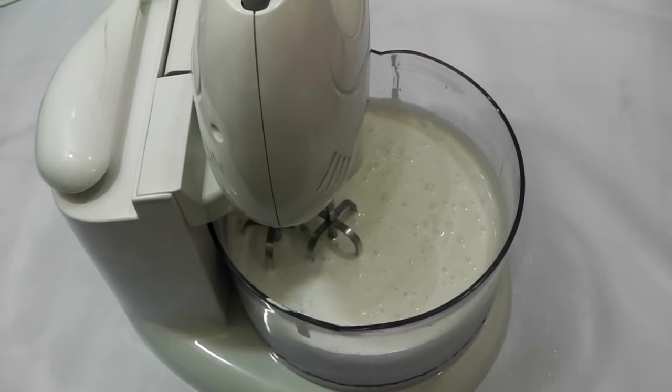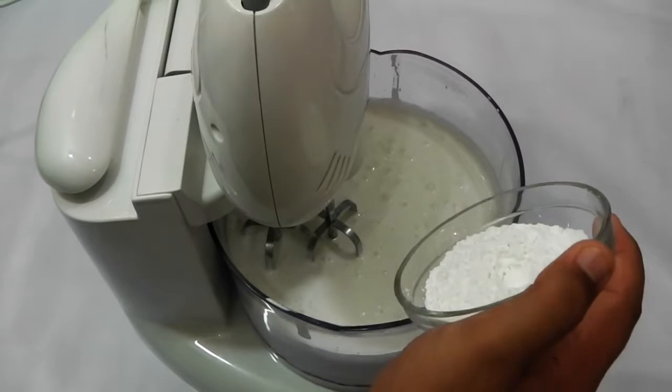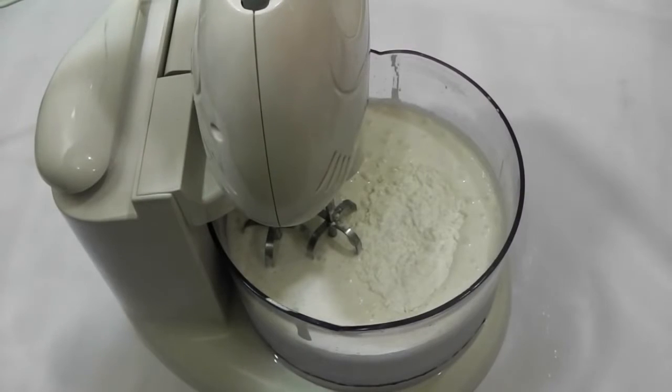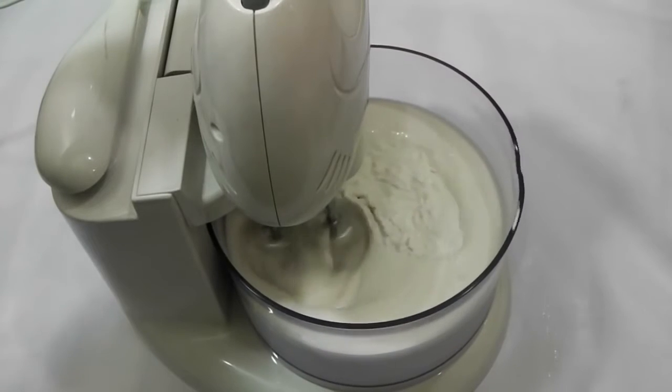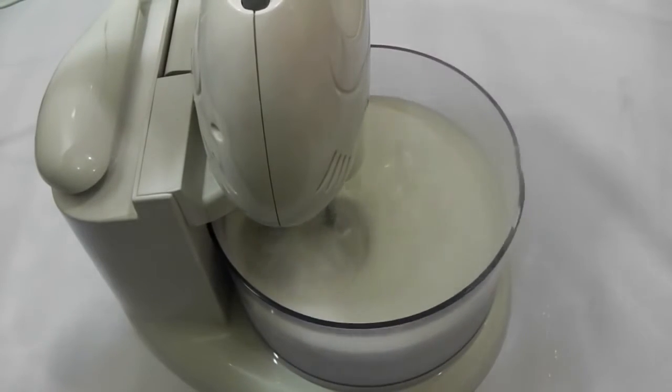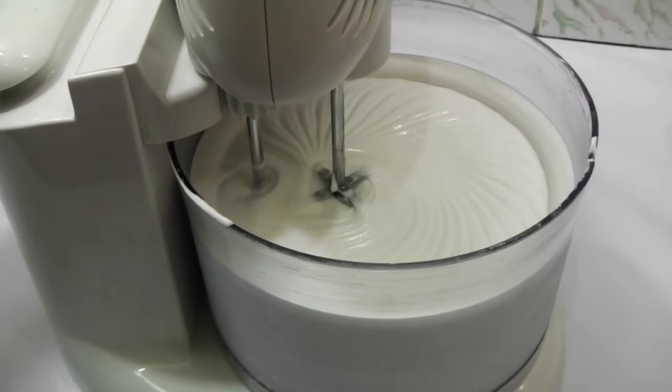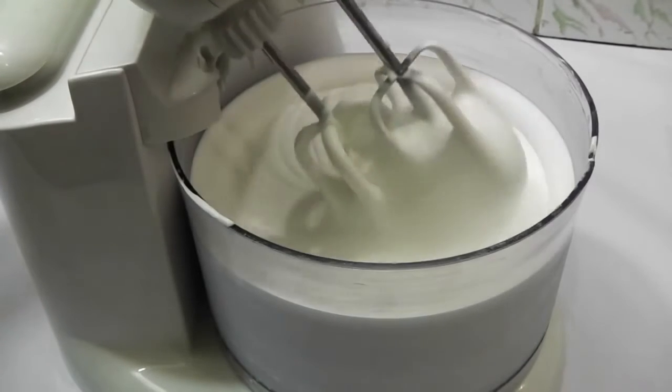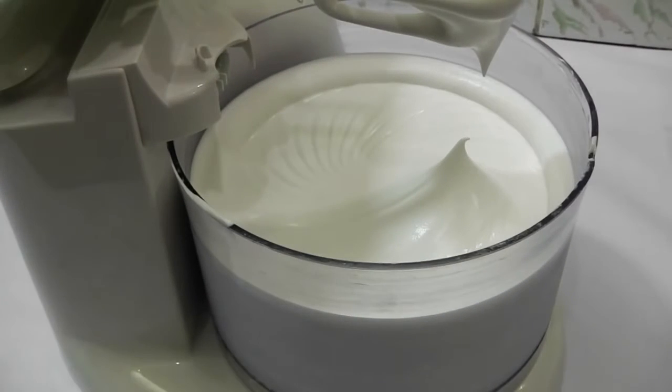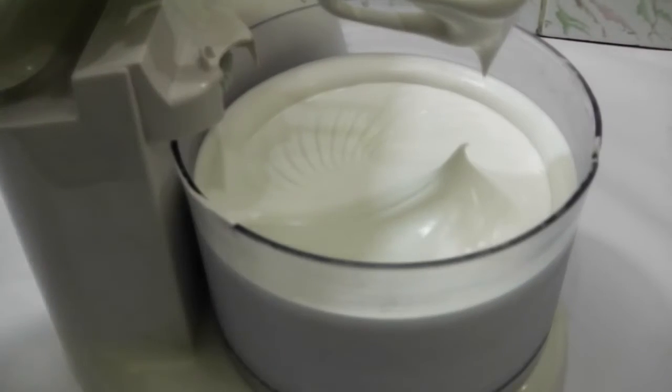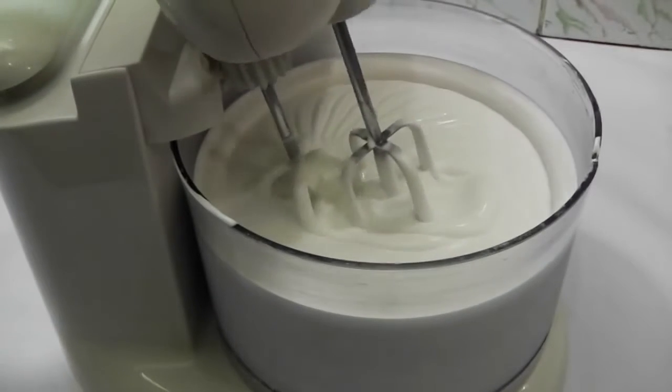Now this cream is double in volume, and now it's the right time to add our powdered sugar or confectioner's sugar. Now we're going to restart it until it reaches stiff peaks. Now our cream is ready and it has reached stiff peaks. Let's see the peaks. It's stiff and nice.